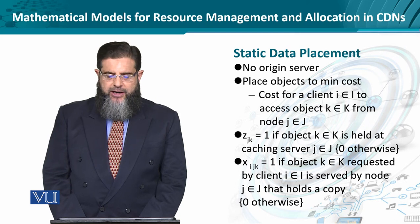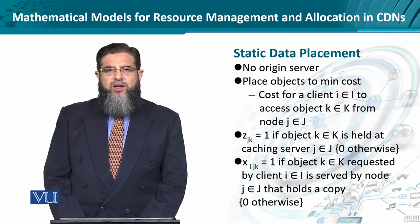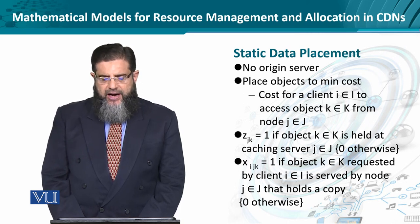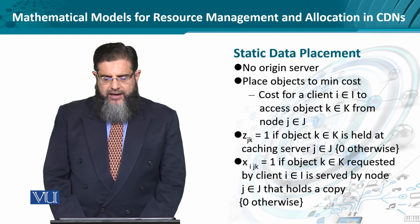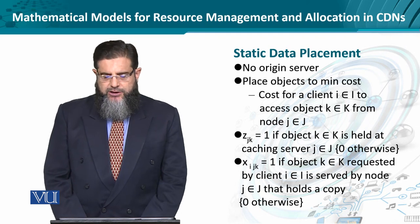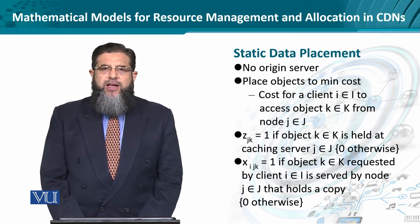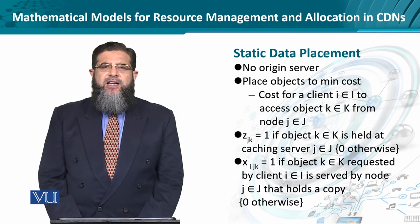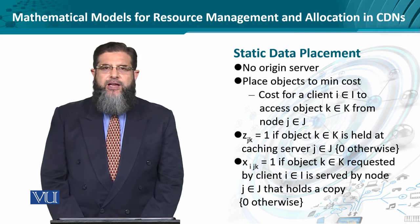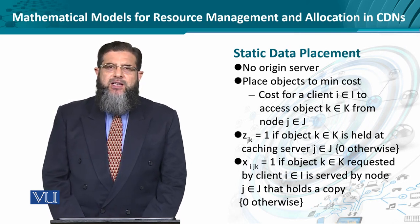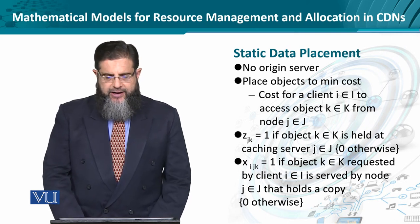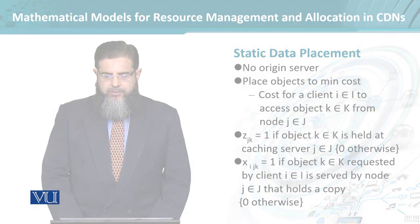Another variable of interest is x,i,j,k. It means if an object is served to a client by a server node which holds a copy, this variable returns one; otherwise it returns zero. This means we can define a mathematical equation yielding a resultant value from different variables — from a simple problem like server placement, or a more complicated integrated problem like static object placement.